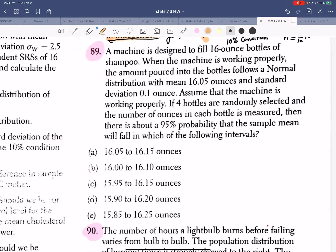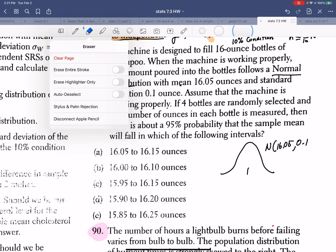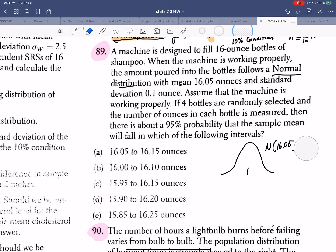89. A machine is designated to fill 16 ounce bottles. When it's working properly, it has a normal distribution with a mean of 16.05 and a standard deviation of 0.1. Now, this is my population distribution, right? Now, it says, assume the machine is working properly. And let's assume we took four bottles. So, that's a sample size of four. So, kind of the activity we did today. Imagine dropping out of the side four bottles.